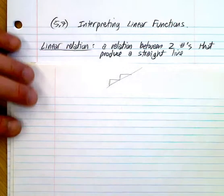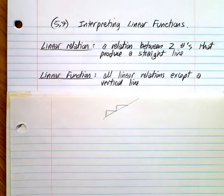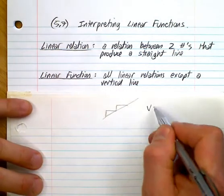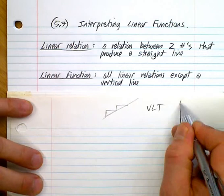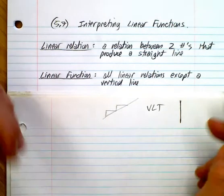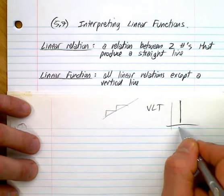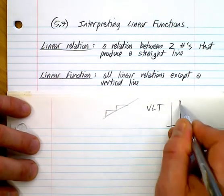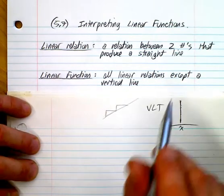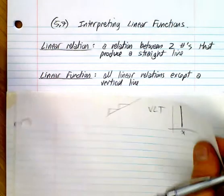Now, a linear function is simply all your linear relations, except we know that your function cannot be vertical, because of that vertical line test. If I have a vertical line, well, then it's not a function because that's an x value that has multiple y's. So it's not a function if it's vertical, and that's essentially all this is saying.